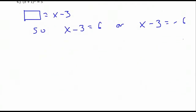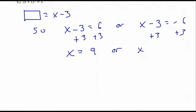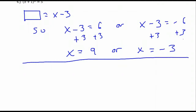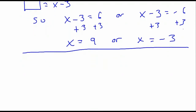Then we solve those resulting linear equations to get x equals 9 — by adding 3 to both sides — or x equals negative 3. Two solutions. We're typically going to get two solutions. We could have at most two solutions to a quadratic equation, or we could have one, or we can even have zero. Sometimes there are no real number solutions to a quadratic equation.